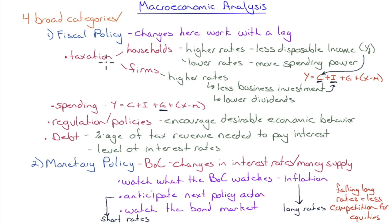The purview of fiscal policy includes taxation, spending, regulation and policies, and the level of debt. For taxation at the household level, higher rates or anticipated higher future rates mean less disposable income; lower rates mean more spending power. When looking at the distribution of income, tax cuts are most impactful in lower income brackets — roughly under $100,000 household income — because those households tend to spend every dollar they make, turning money over faster.